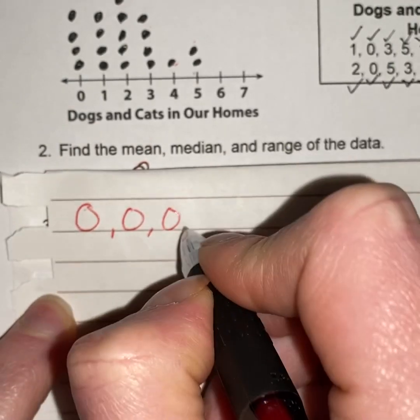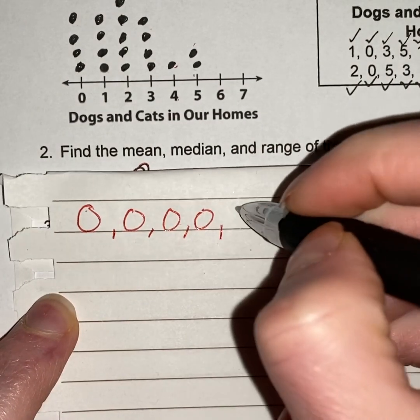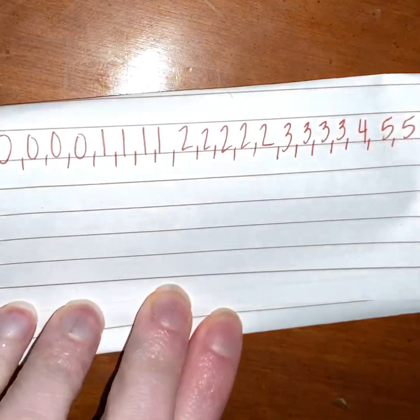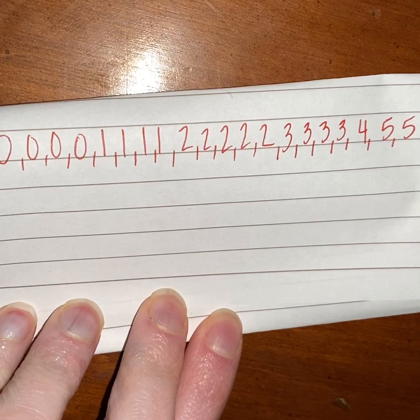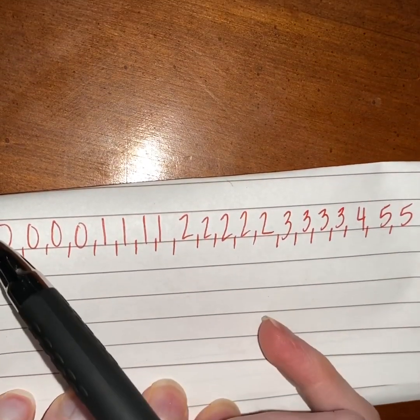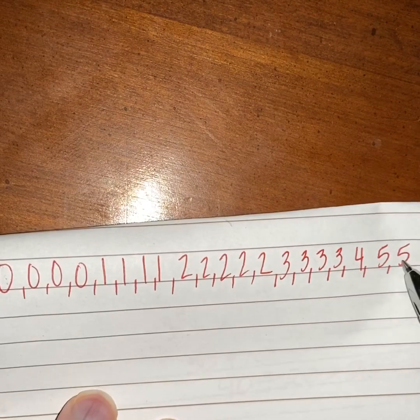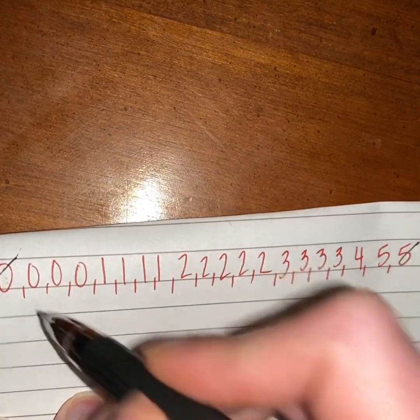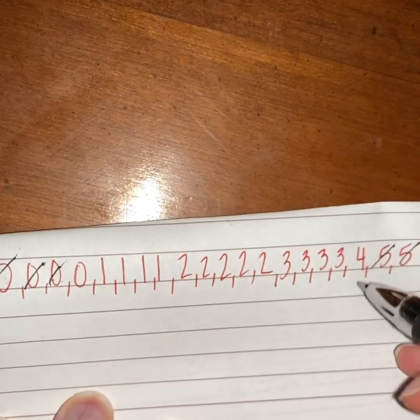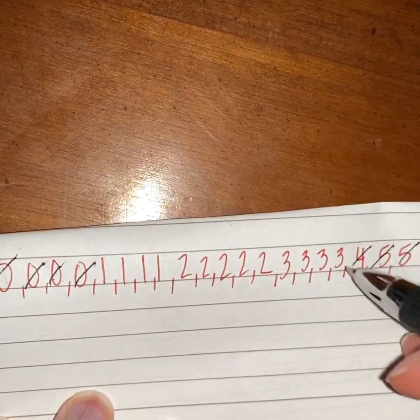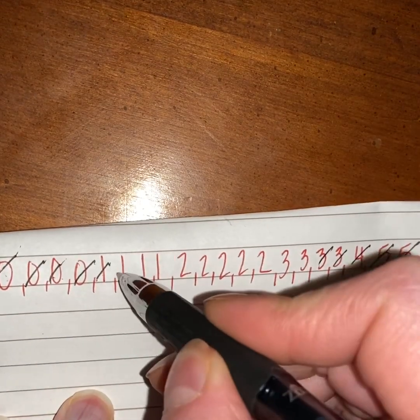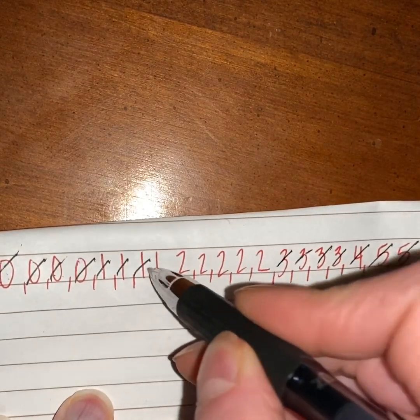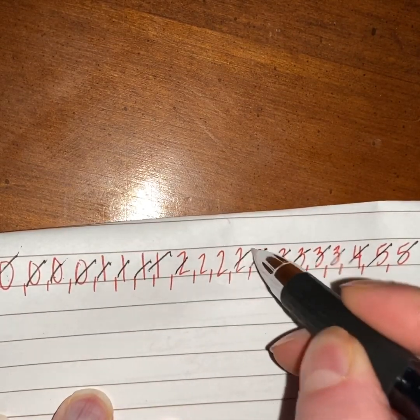Okay, so now in order to find the median, I'm going to mark off the least number, one of the least and one of the greatest, until I get to the center. So gone, gone, two, two, three, three, four, four, five, five, six, six, seven, seven, eight, eight, nine, nine.